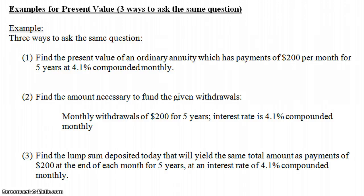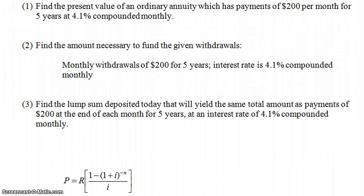And the third way you could ask the same question is find the lump sum deposited today that will yield the same total amount as payments of $200 at the end of each month for five years at an interest rate of 4.1% compounded monthly. These are three different ways of really asking the same question. So how do you answer this question?